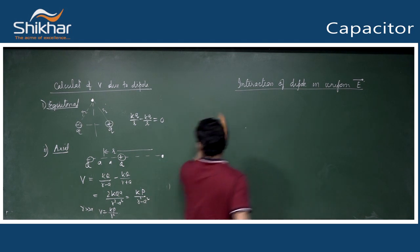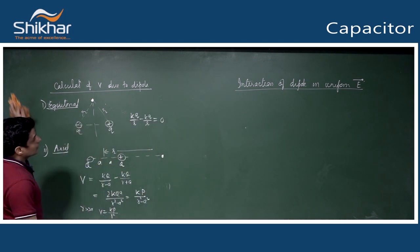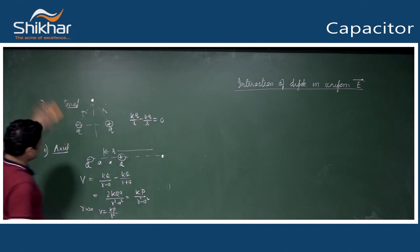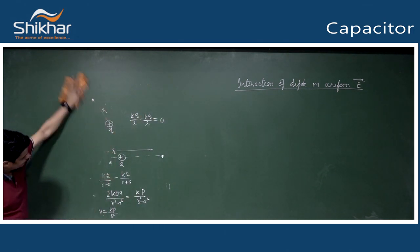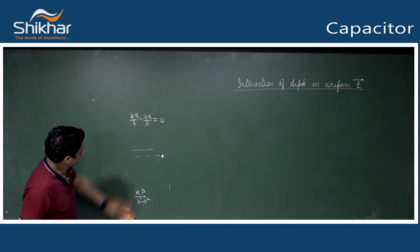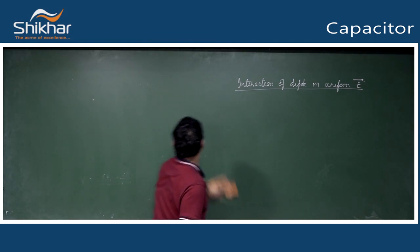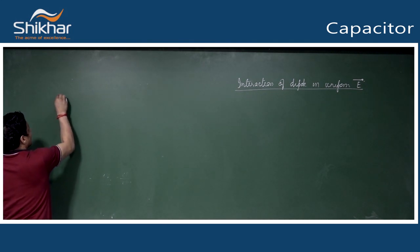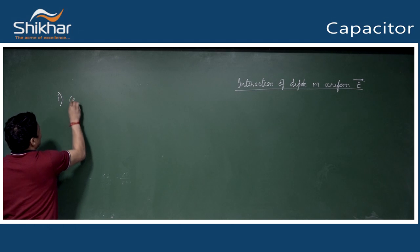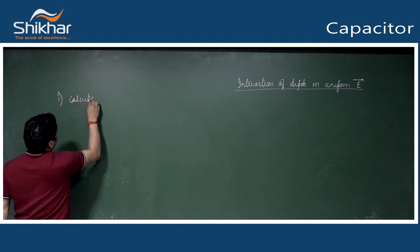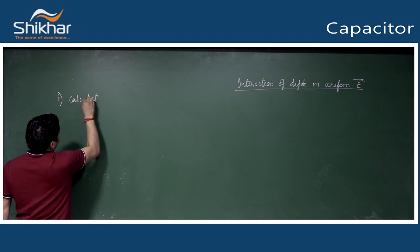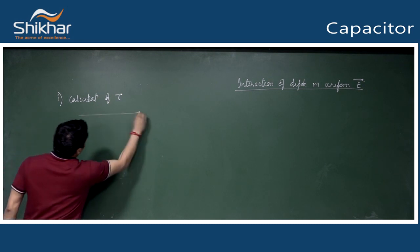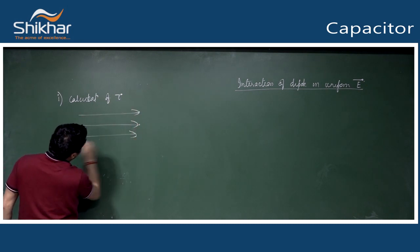Now, calculation of potential energy and torque - their proofs may be asked in exams. Let us write the proof of torque, i.e., how does p cross E arise.